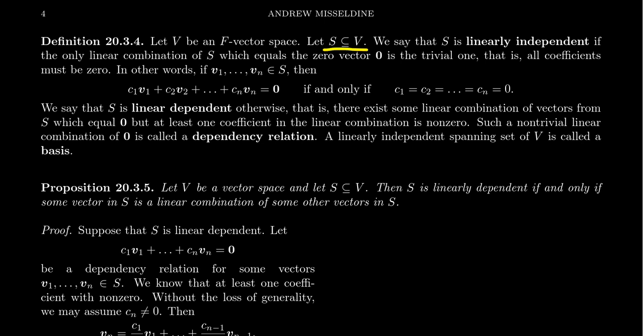Let S be a subset of the vector space V. We say that a set S is linearly independent if the only linear combination of S which equals the zero vector is the trivial one — that is, all the coefficients have to be zero. In other words, if you take any finite number of vectors inside of S, say V1, V2 up to Vn, this must be a finite number of vectors because we don't have any notion of an infinite sum without some notion of topology, which we are not introducing at this moment.